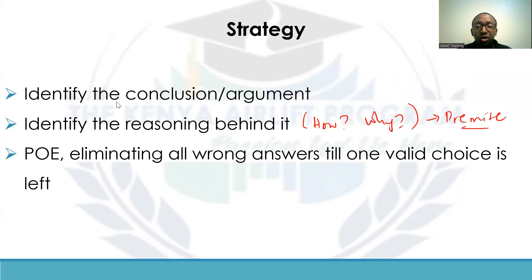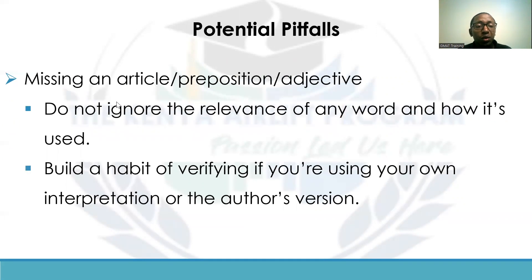This valid choice must either strengthen the conclusion for strengthening questions or weaken the conclusion for weakening-the-argument questions. Some potential pitfalls can cause you to miss these types of questions — and the first applies to all CR questions: if you miss an article, a preposition, or an adjective, you can go wrong.